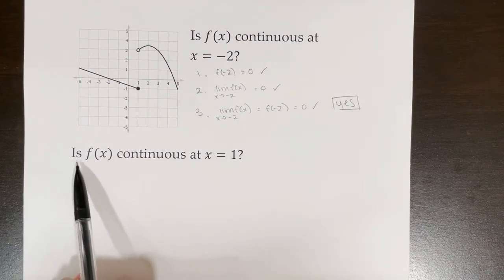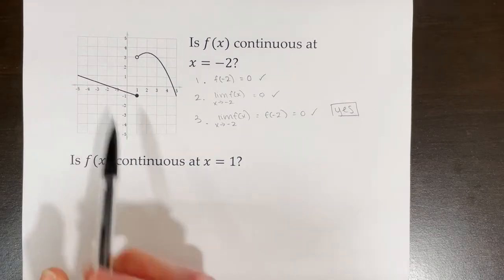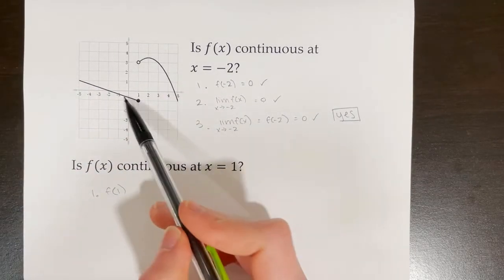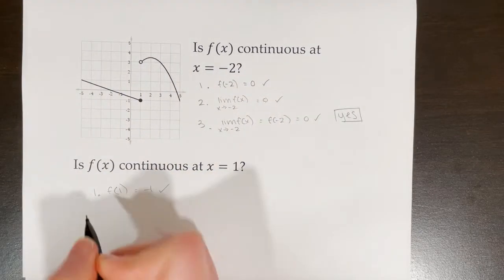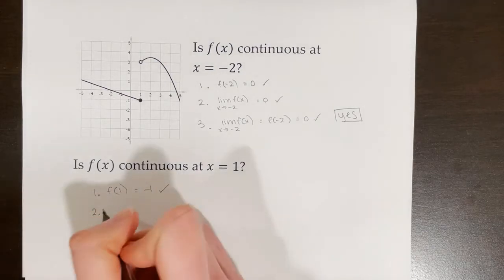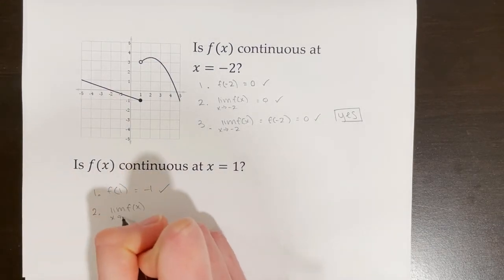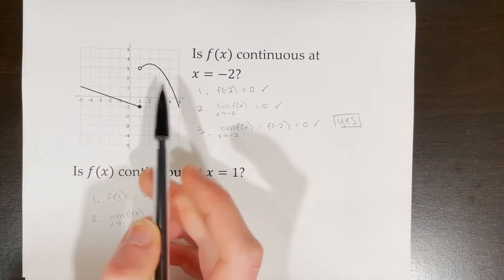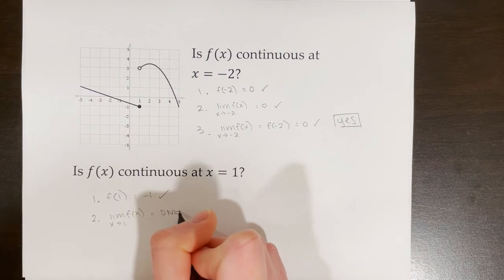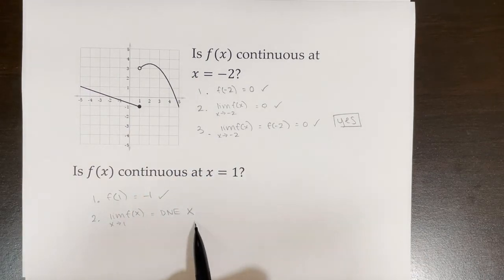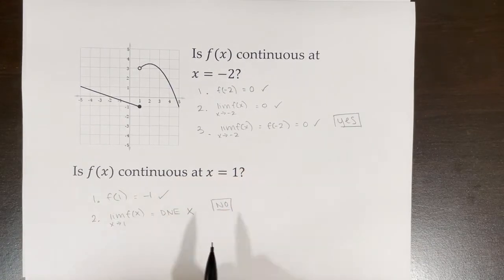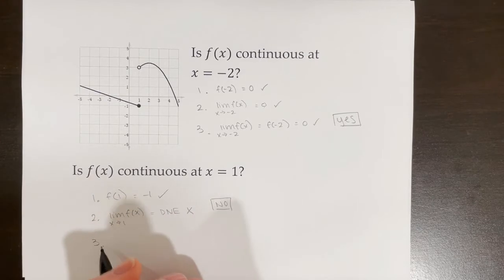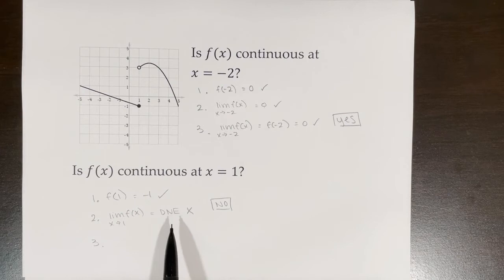In this bottom example, we'll look at if f of x is continuous at x equals one. First step: f of one is negative one — that exists, step one is good. Next, we look at the limit of f of x as x approaches one. From the left side it's approaching negative one, but from the right side it's approaching three. Since the left-sided and right-sided limits don't match, this limit does not exist. So f of x is not continuous at x equals one. If we were to go on to step three, negative one is not equal to 'does not exist,' so that criteria would also not be met.